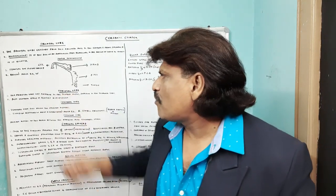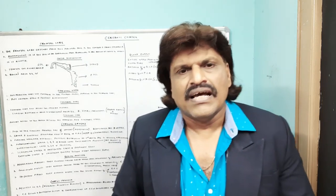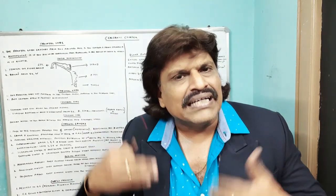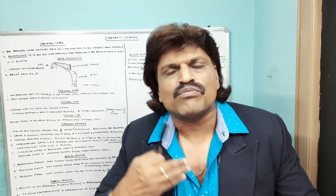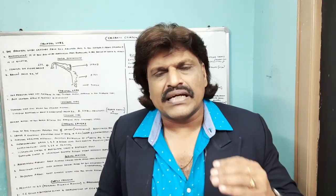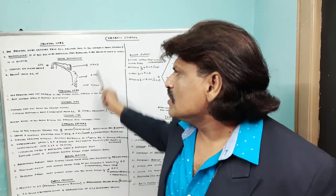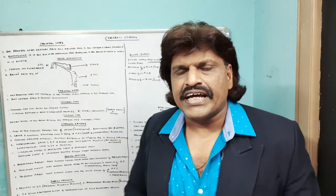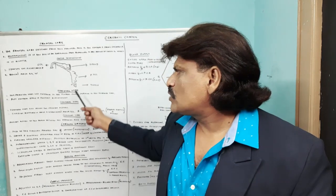Another important area is Broca's area, areas number 44 and 45, which is responsible for fluency of speech. If Broca's area gets affected, the person can understand speech but cannot speak fluently — it will be meaningful but telegraphic speech, known as Broca's aphasia. Broca's area is supplied by the superior division of the middle cerebral artery.